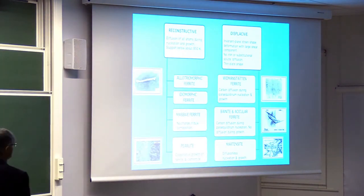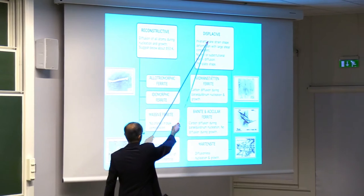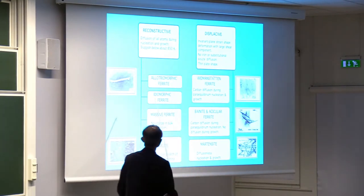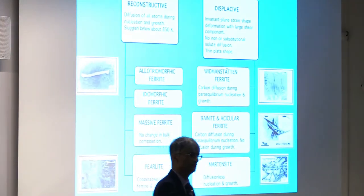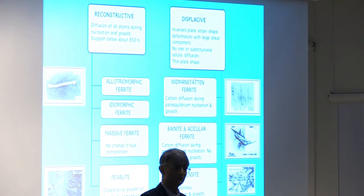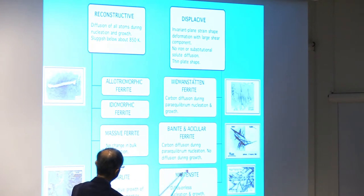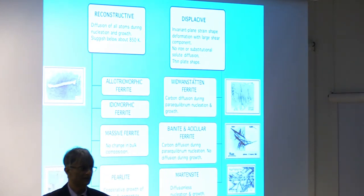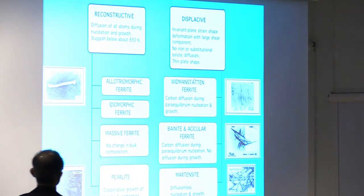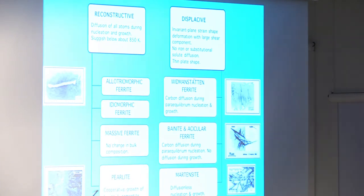Now I'm going to summarize a few of the transformations that happen in steels and classify them into two types. First, displacive transformations, which I will deal with in the first lecture. Second, reconstructive transformations, where you break all the bonds and rearrange atoms into a different pattern — there is quite a lot of diffusion and very little strain, so they are closer to equilibrium. In displacive transformations we have Widmanstätten, bainite, and martensite. I'm going to begin with displacive transformations and show you their common features.